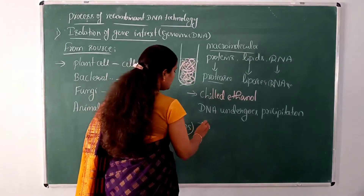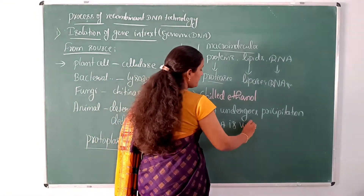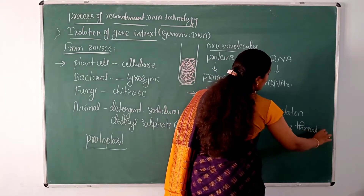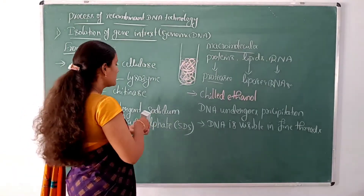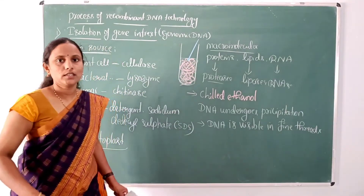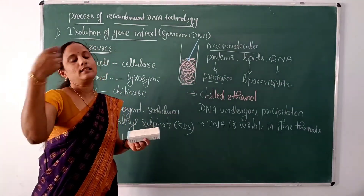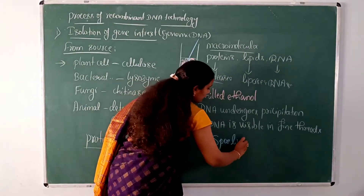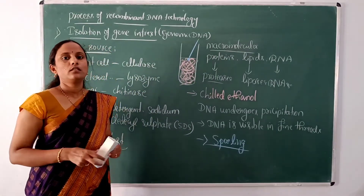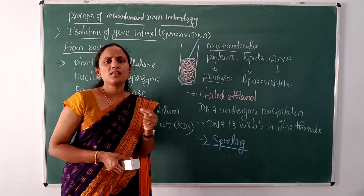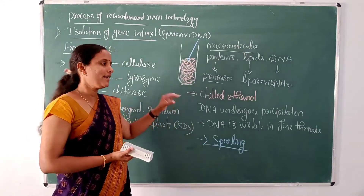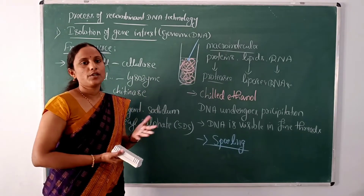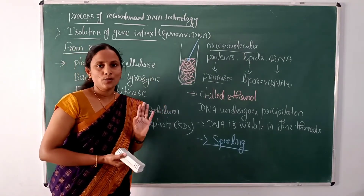After the DNA undergoes precipitation, it is visible as fine threads. These fine threads of DNA can be taken out by spooling — that is, by using a spatula or needle, we can take the precipitated DNA out of the solution. That process is called spooling. After taking the DNA, we have obtained the genomic DNA, and from that, the gene of interest should be isolated.